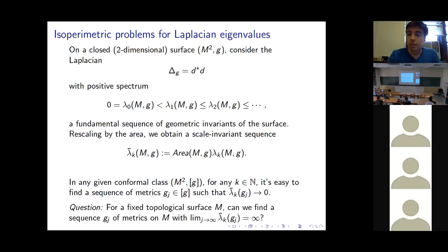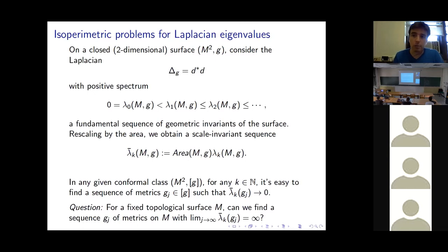Alternatively, fixing just the topological type of the surface, we can ask whether there's a sequence of metrics which makes these scale-invariant eigenvalues blow up to infinity. If we ask an analogous question in higher dimension the answer is yes, but it turns out that for surfaces the answer is no.